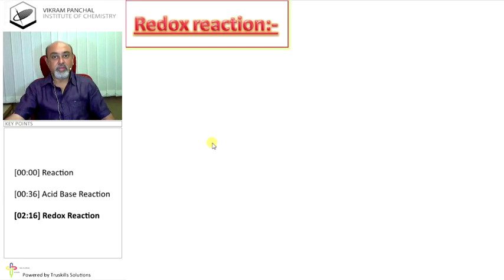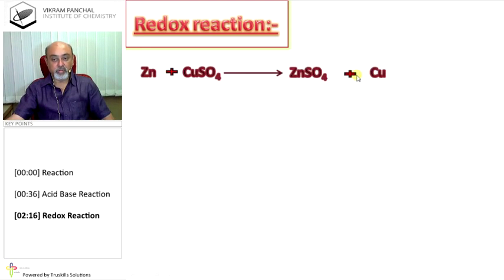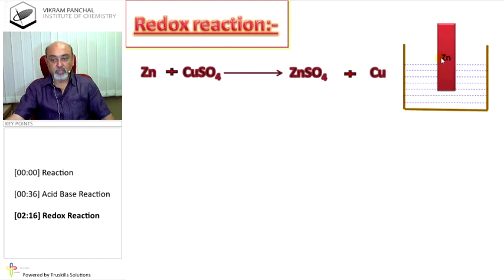Next chemical reaction is redox reaction. If you take zinc and copper sulfate solution, then zinc sulfate and copper is produced. So, keep zinc plate in copper sulfate solution. This reaction may be possible.